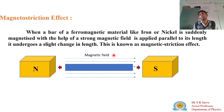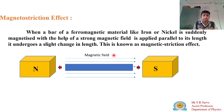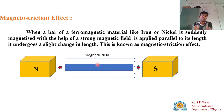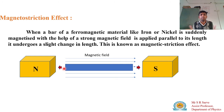The magnetostriction effect states that whenever a ferromagnetic material rod — made up of materials like nickel, cobalt, or alloys of magnetic materials — is placed in a magnetic field, we magnetize and demagnetize it along its length. When this ferromagnetic rod is magnetized and demagnetized, it gets compressed and expanded repeatedly, causing it to vibrate and generate a frequency.